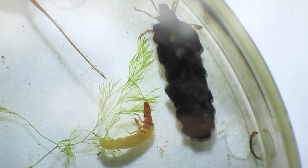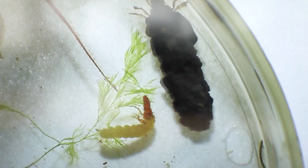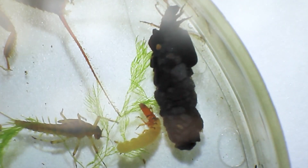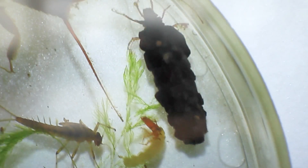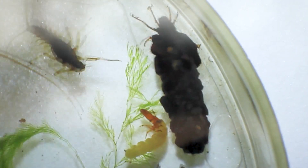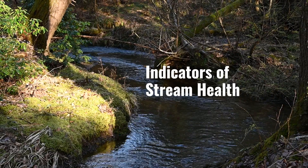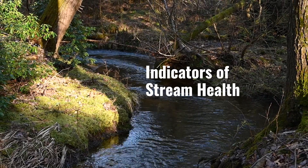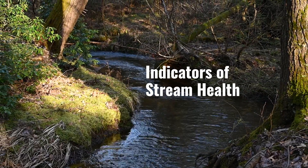You can see that there's a lot of diversity here — we have a lot of different types of organisms, and that can be an indicator of a healthy stream, depending on what kind of organisms you're finding.